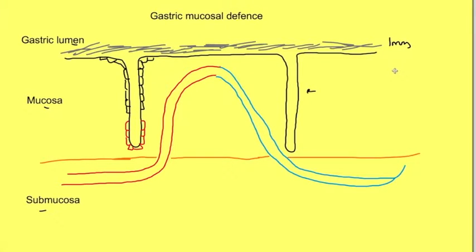With HCL secretion, bicarbonate goes into the blood, known as alkaline tide. The bicarbonate passes through blood and is captured via surface epithelial cells which secrete this bicarbonate into the gastric lumen, forming a mucous bicarbonate layer.